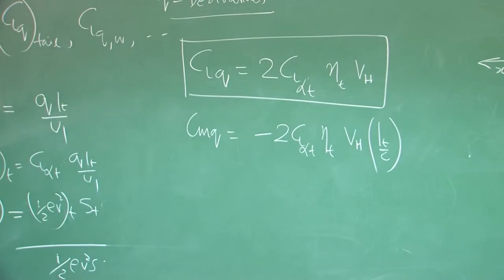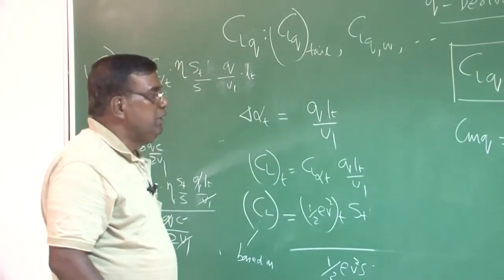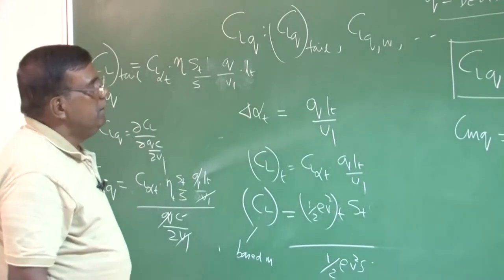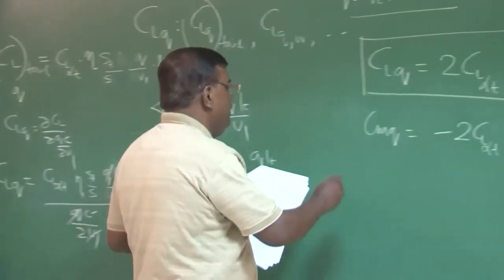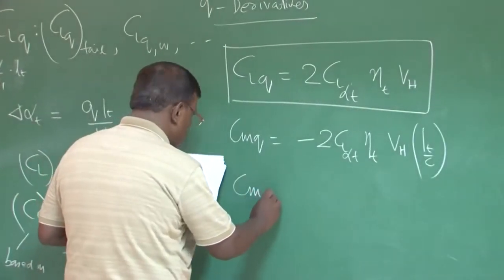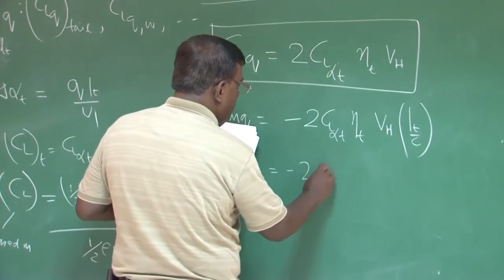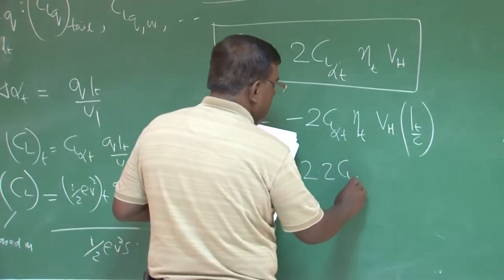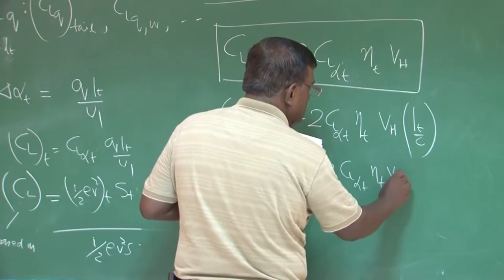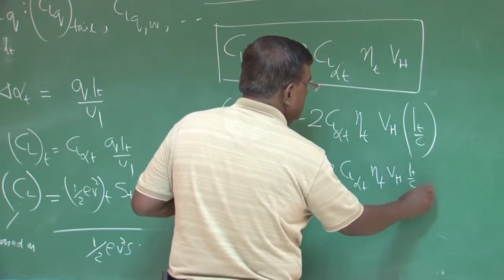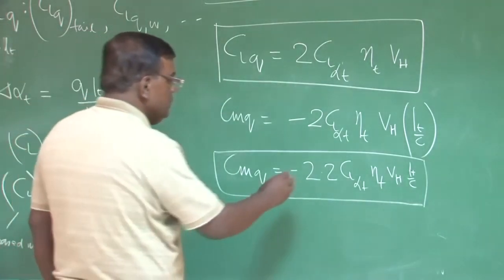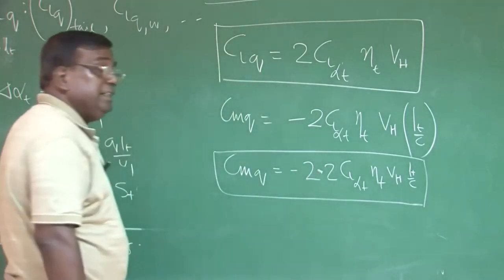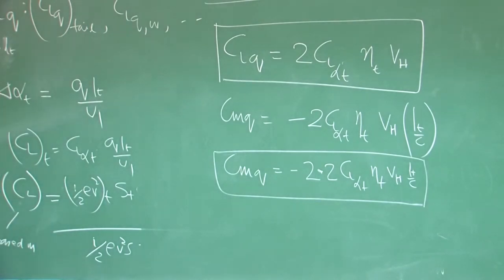But as I told you, this is the expression for a contribution by tail. But generally, wing also will contribute, fuselage also will contribute. So, you can roughly as a design stage, you can take CMq as minus 2.2 CL alpha tail nita t Vh Lt by C. This is also very recommended value or expression at design stage, please understand this.